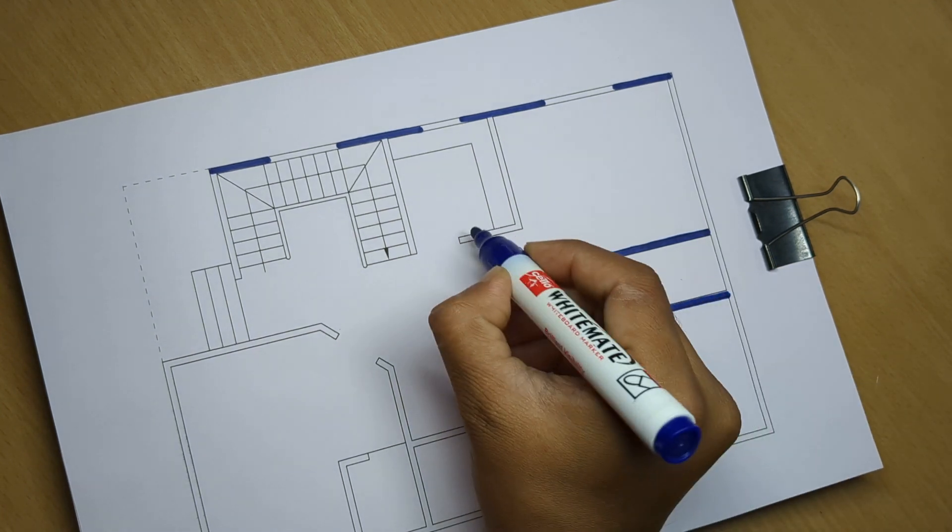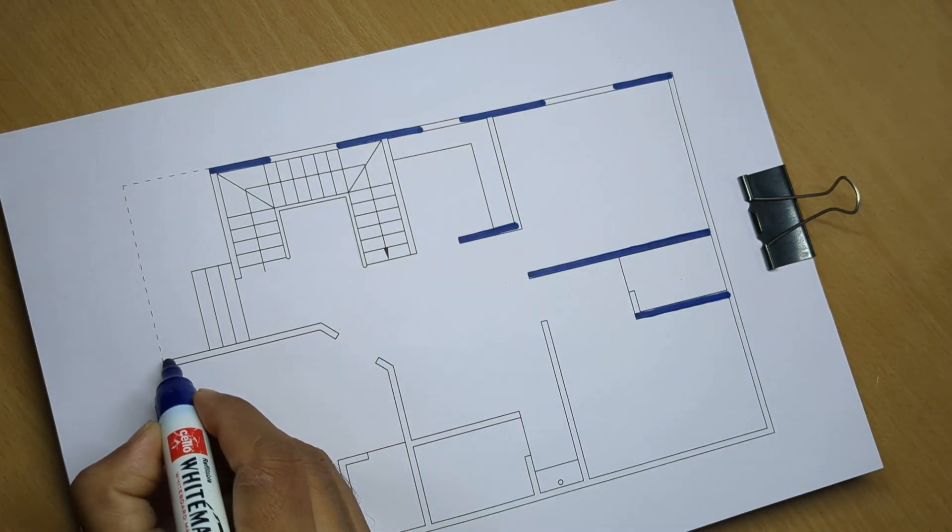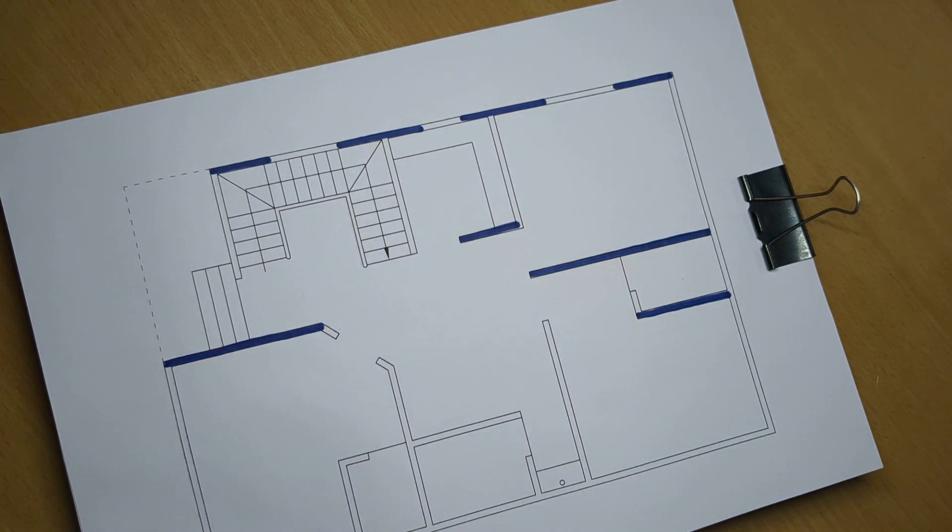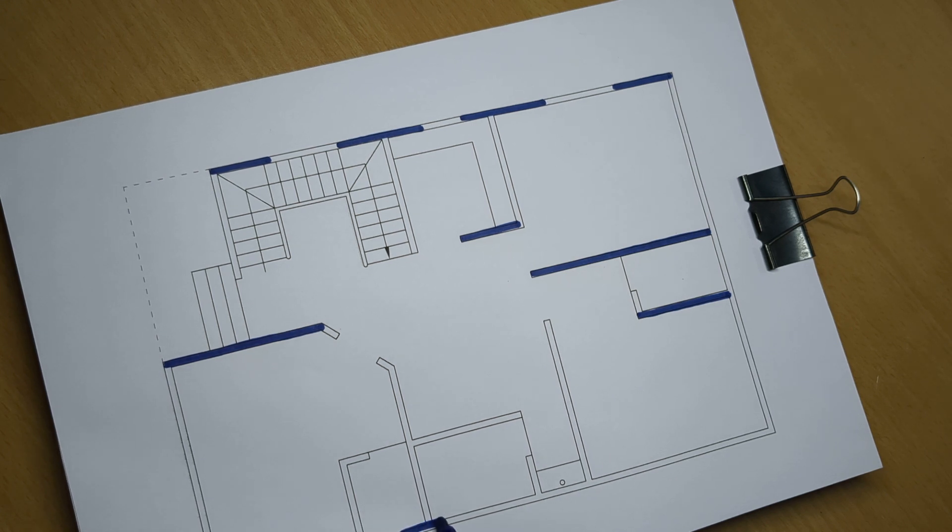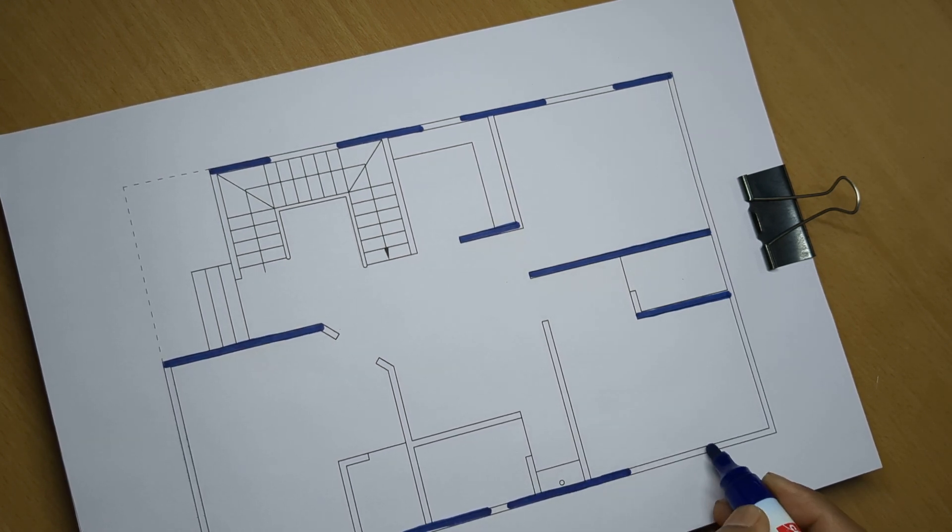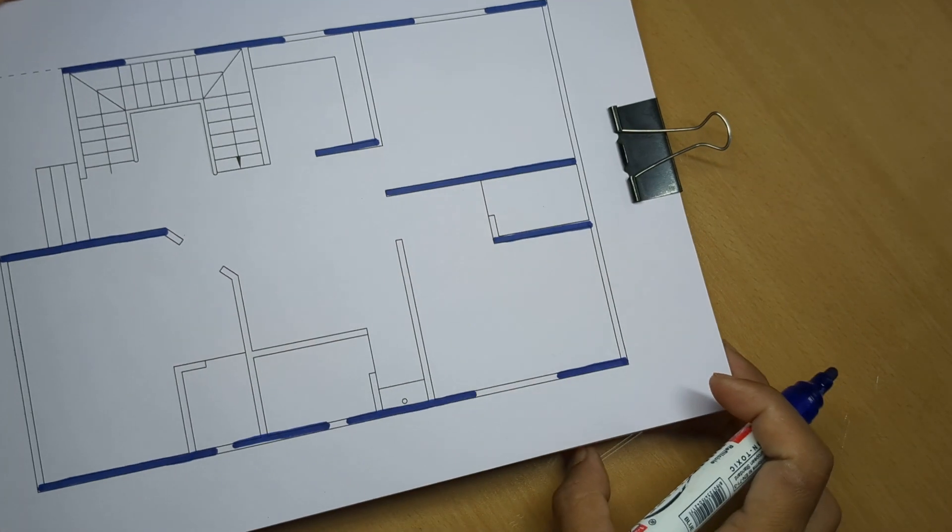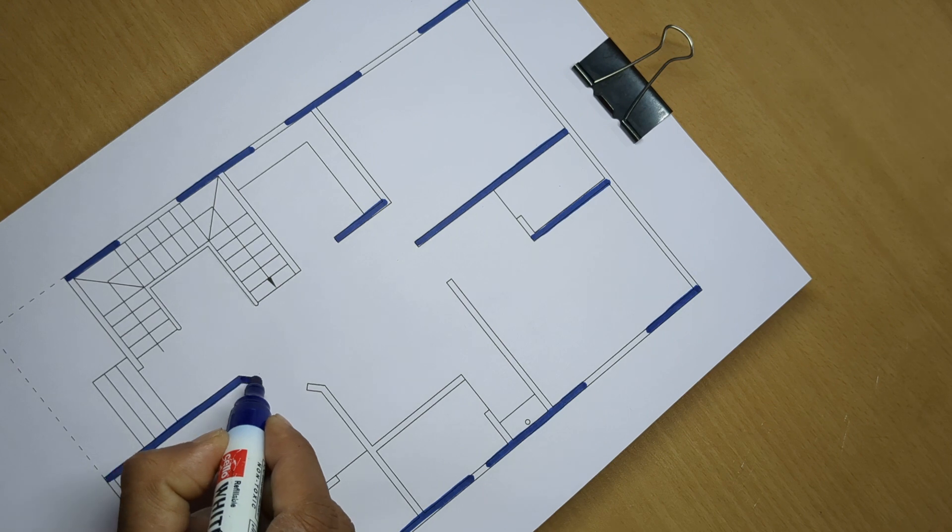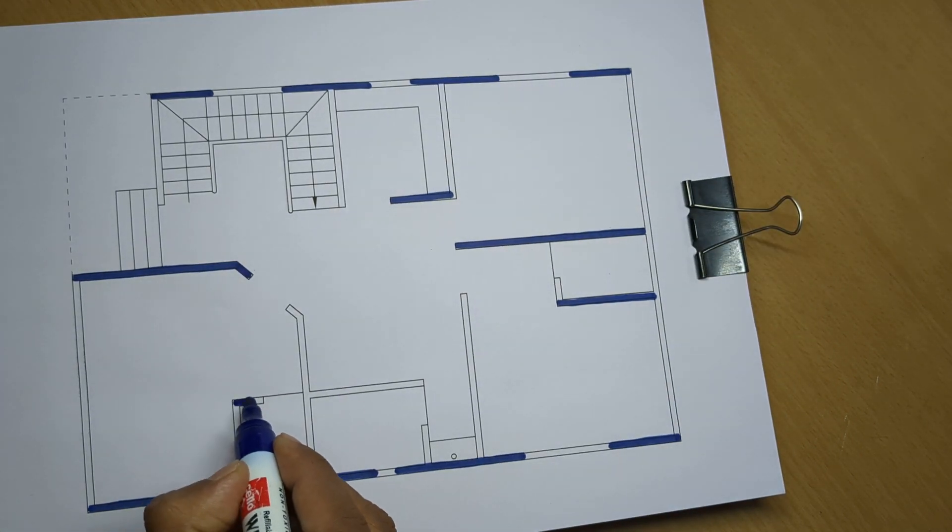First scow wall 125 mm highlight karke, ready karne ke bad.